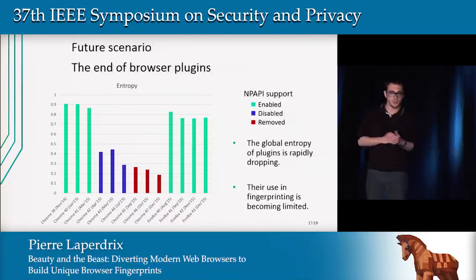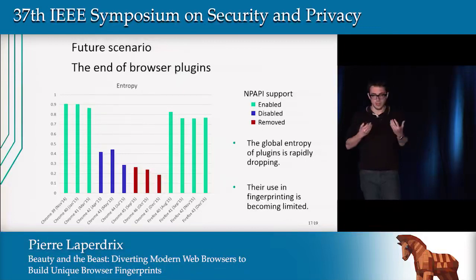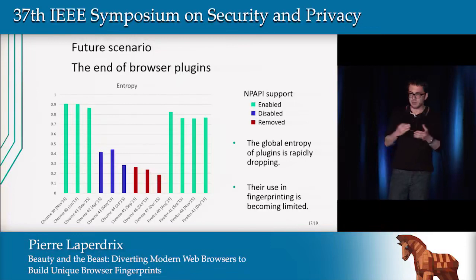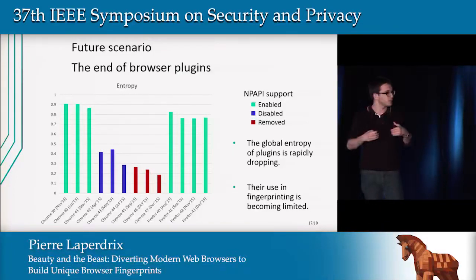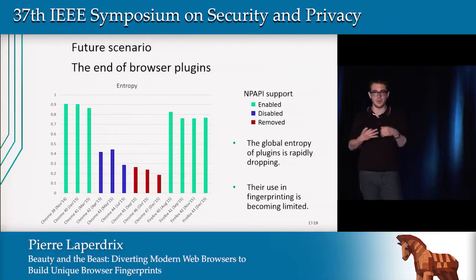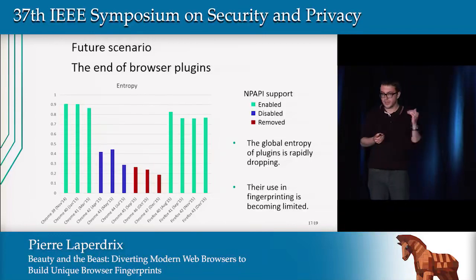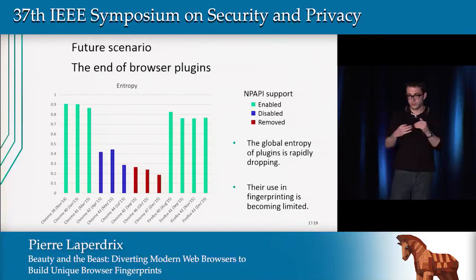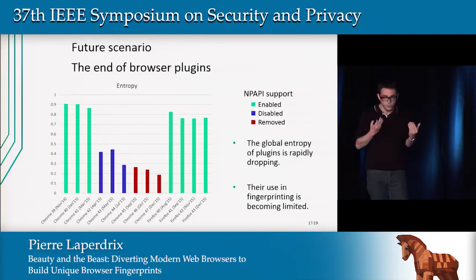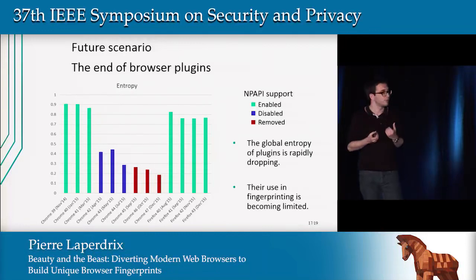Now I want to discuss future scenarios — what would happen to browser fingerprinting if the browser evolved? The first scenario is the death of browser plugins, which is currently underway. Google said the old NPAPI plugin architecture is the leading cause of crashes, bugs, and security incidents, so they disabled NPAPI support in Chrome 42 and completely removed it in Chrome 45. As soon as support was disabled, the entropy for plugins dropped quickly and is now coming down to almost zero. So while plugins and fonts were very useful for identifying desktops, in the future plugins used in browser fingerprinting will become much more limited.